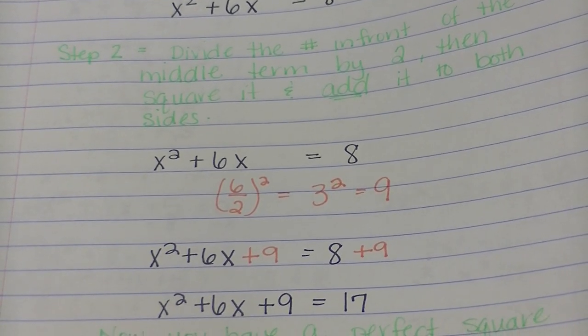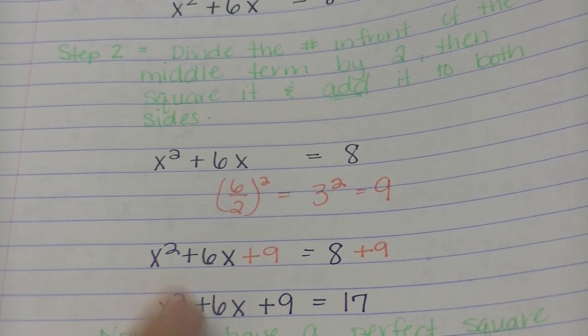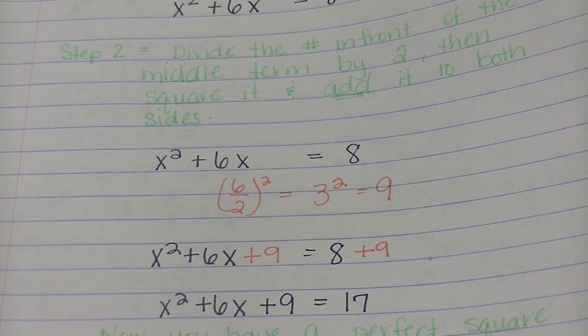So I get x squared plus 6x plus 9 equals 17. Now you have a perfect square trinomial over here on the left side.